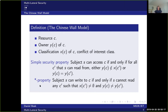The star property says that a subject s can write to c if and only if s cannot read from any c-prime such that the conflict-of-interest class for c-prime is not empty. If c-prime has no conflict of interest at all then it is fine. Additionally, the owner of c must not be the owner of c-prime. This prevents information leakages between compartments.